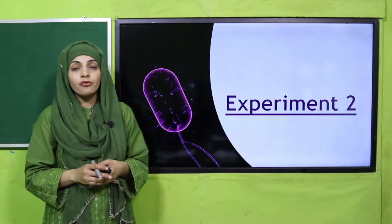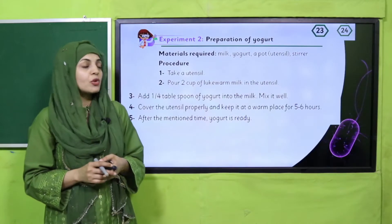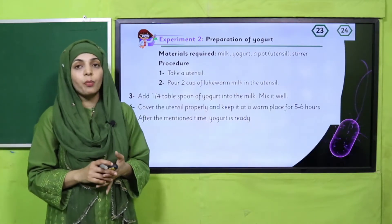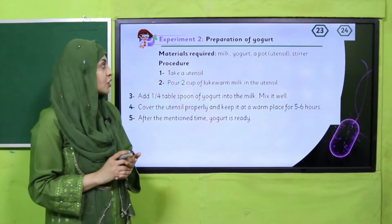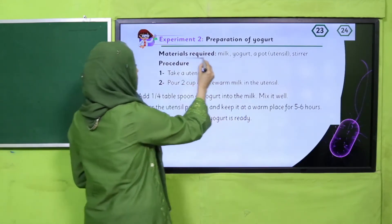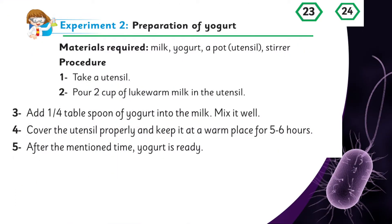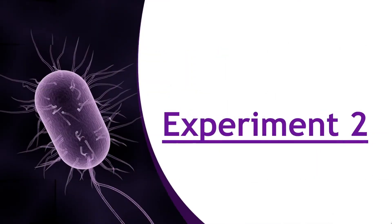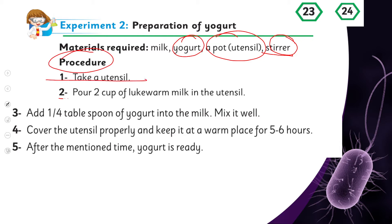Today we will perform experiment number two from your Science 5 book, chapter number two, on pages 23 and 24. Quickly open the pages. The materials required are: milk, yogurt, a pot or utensil, and a stirrer or spoon.